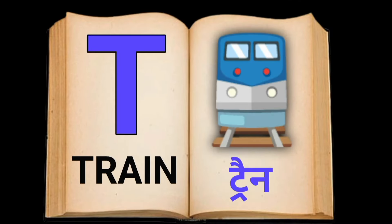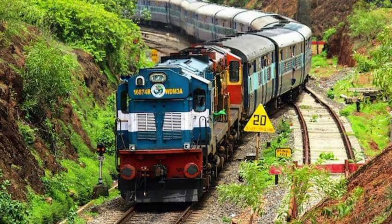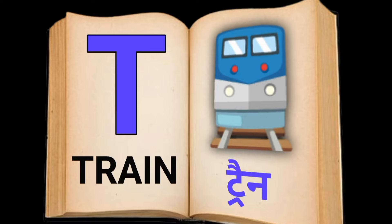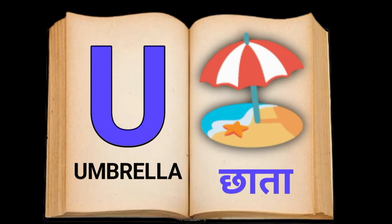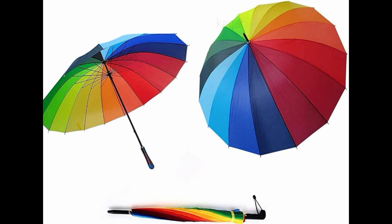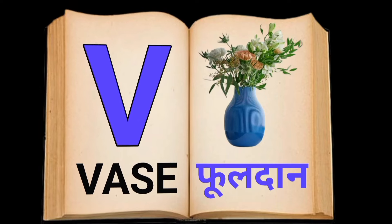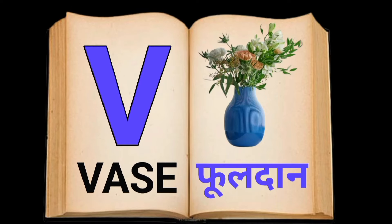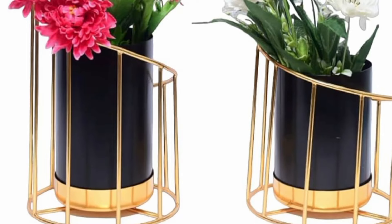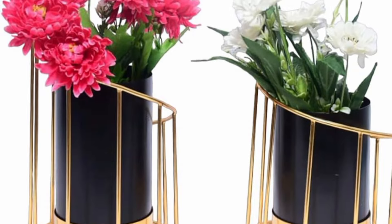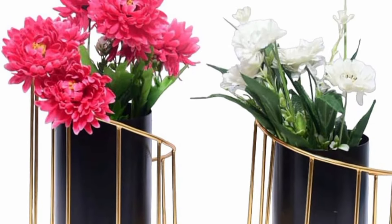T for Train, Train, meaning train. U for Umbrella, Umbrella, meaning chhata. V for Vase, Vase, meaning phuldan.